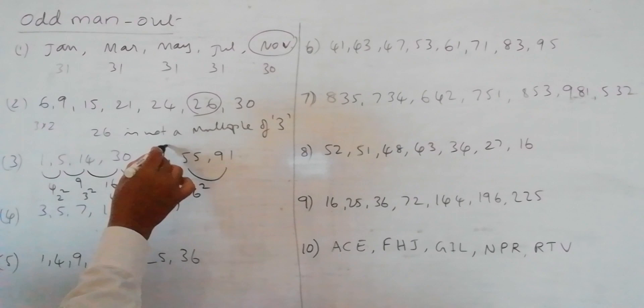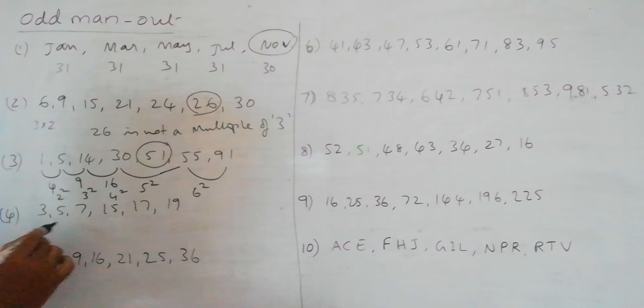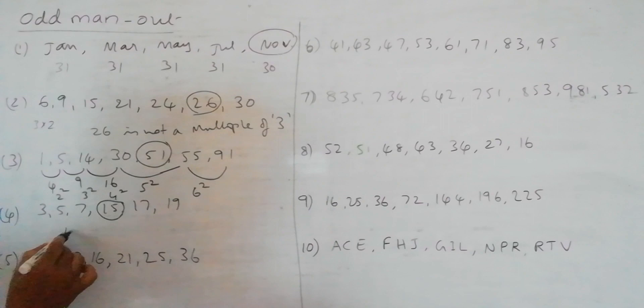Next, here we have 3, 5, 7, 15, 17, 19. If you observe except 15, remaining numbers are prime numbers. So 15 is not a prime.